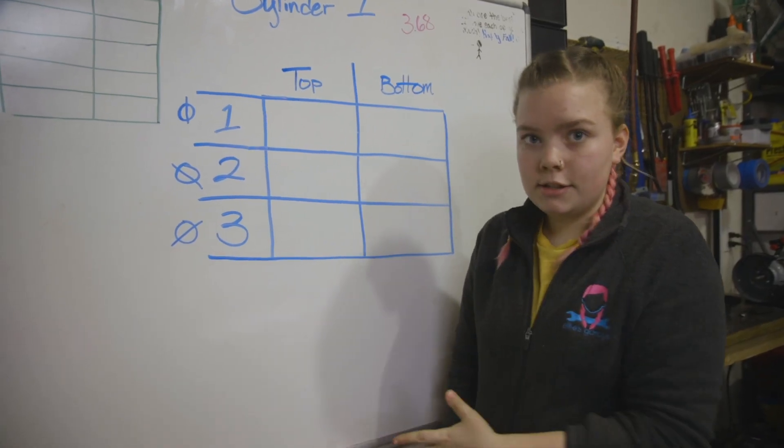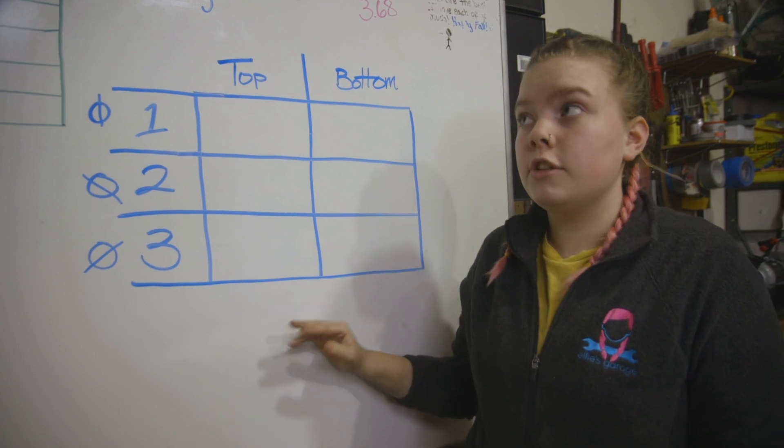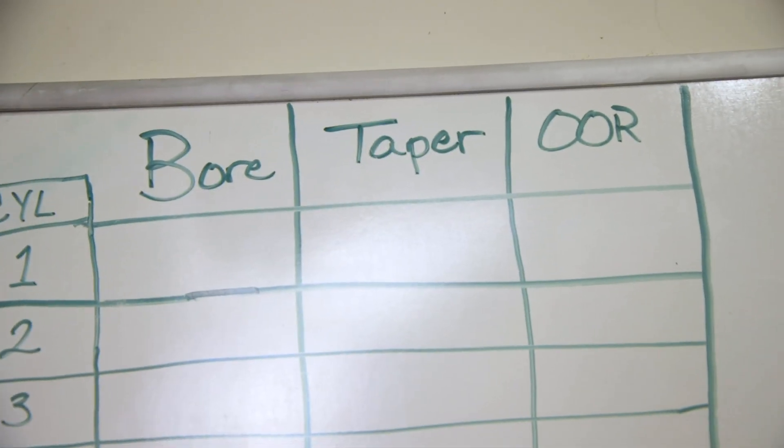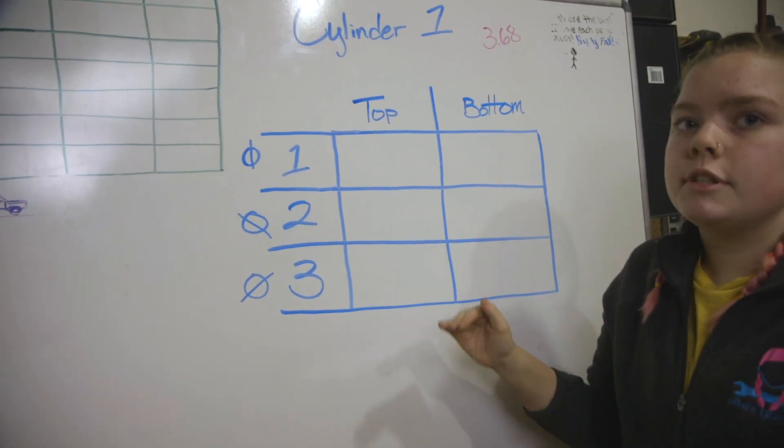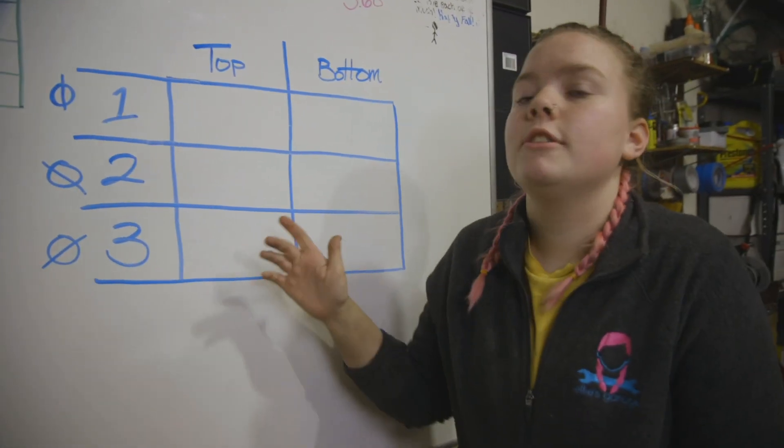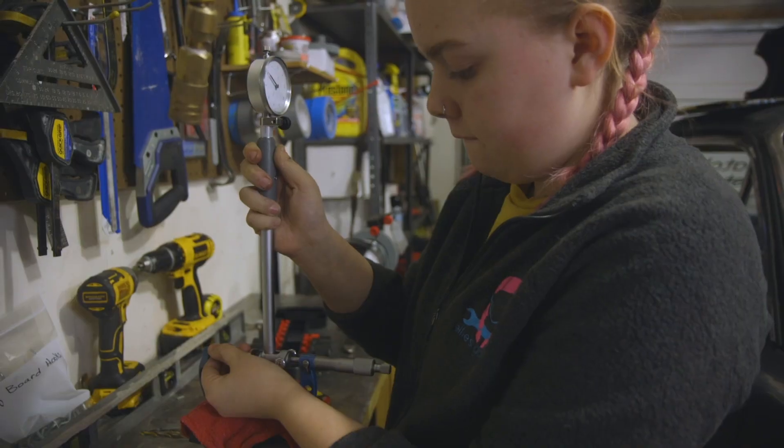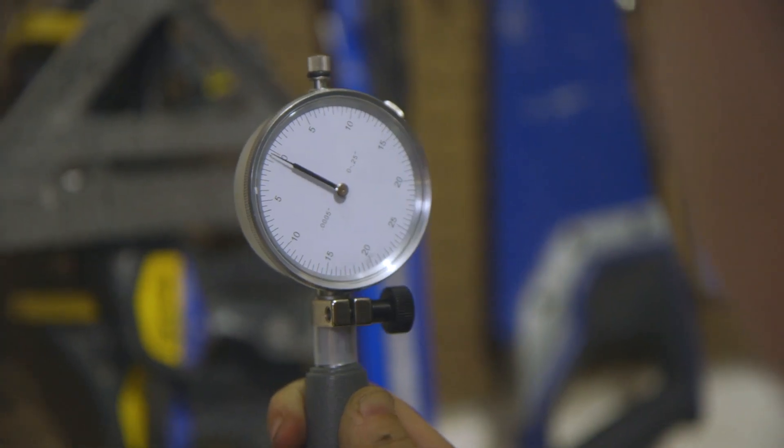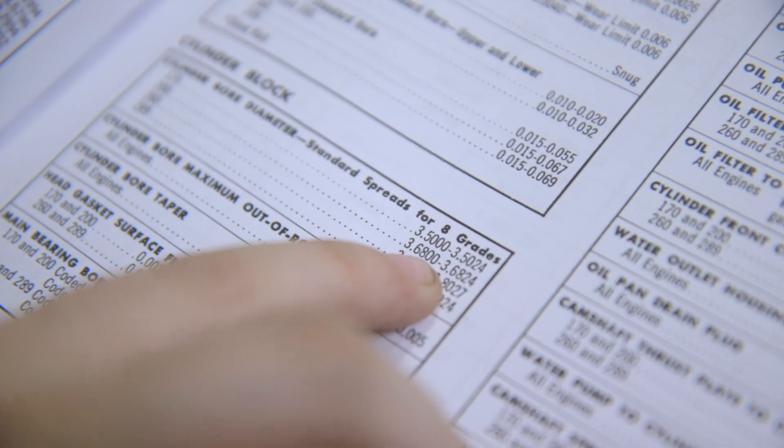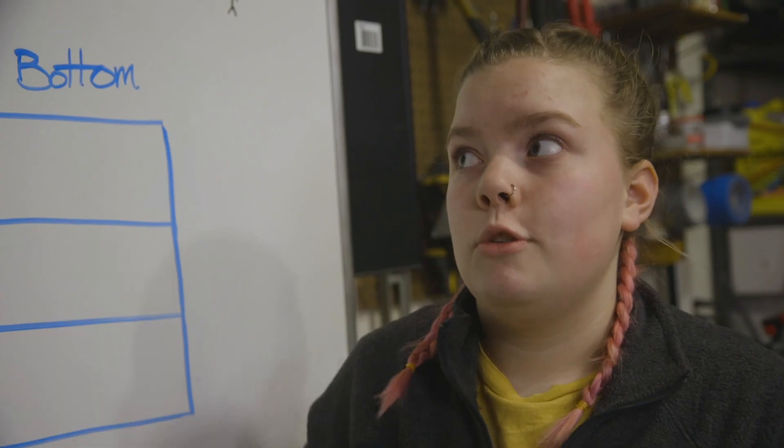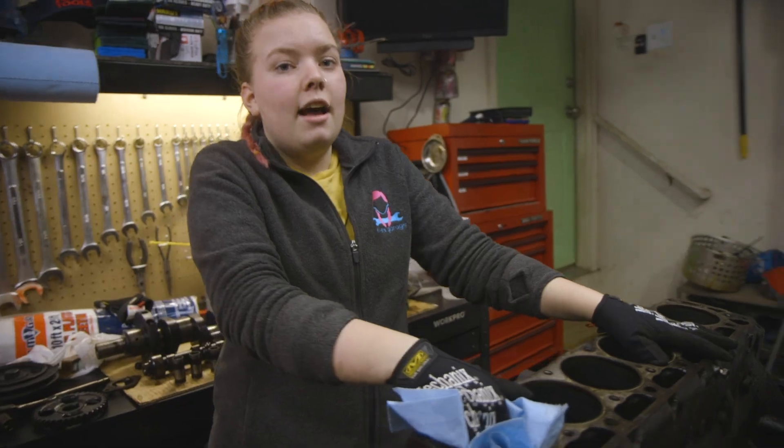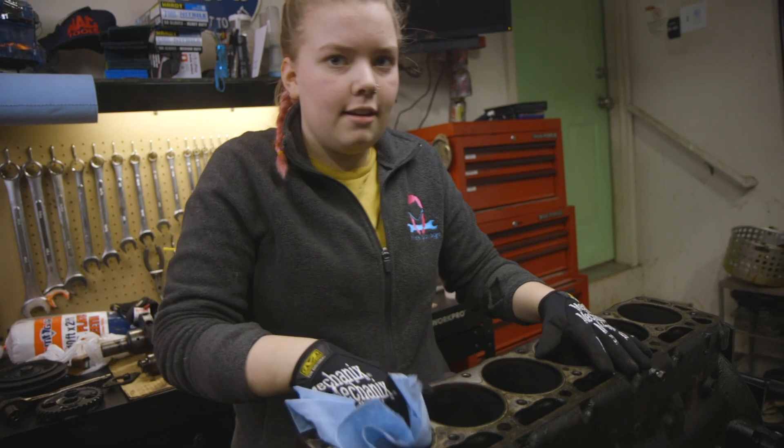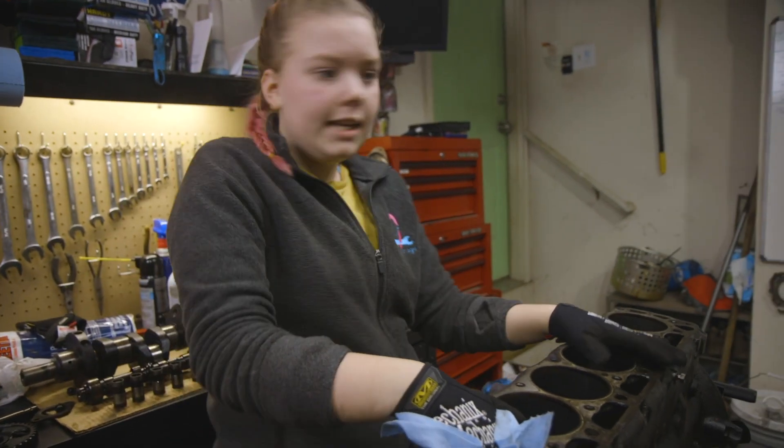So we're going to start with the cylinders, and for each cylinder we're going to be measuring the bore taper out and around. We're going to be measuring the top and bottom of the cylinder in three different positions. We have our dial bore gauge set to 3.68, which was the minimum that the cylinders need to be. I'm getting started by just giving the cylinders a quick wipe out so that we don't get any gunk on the gauge.